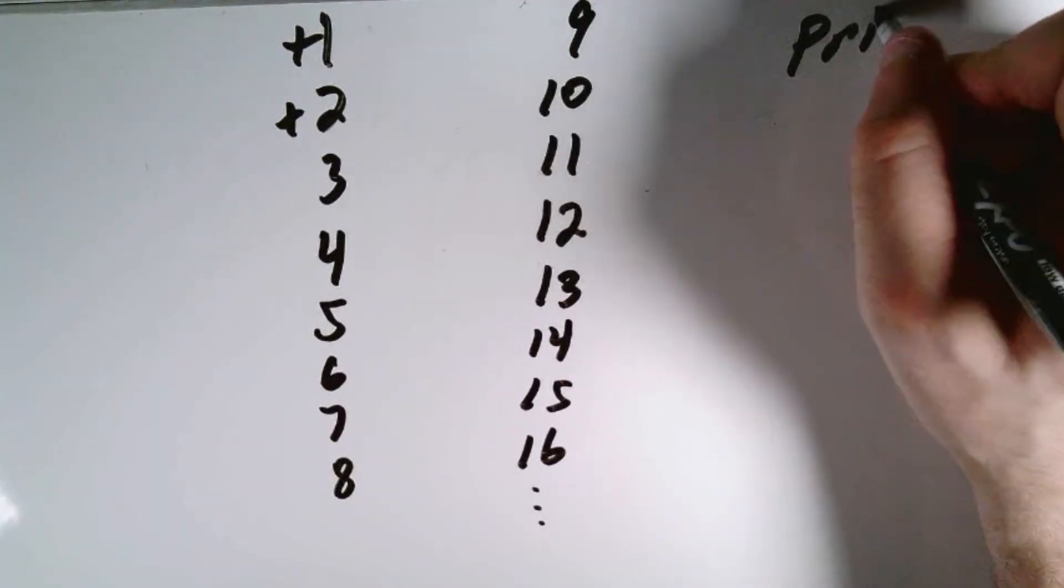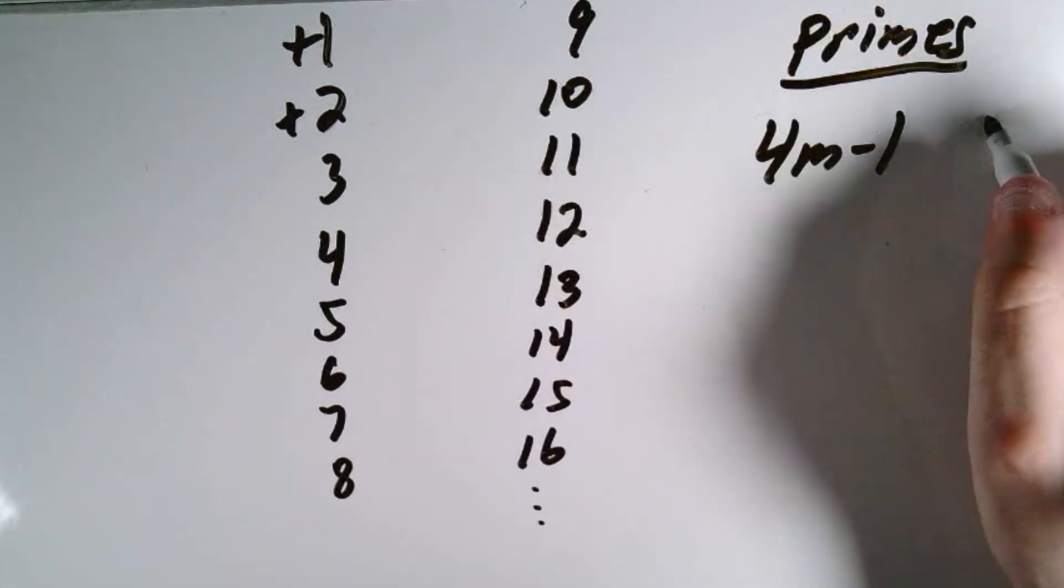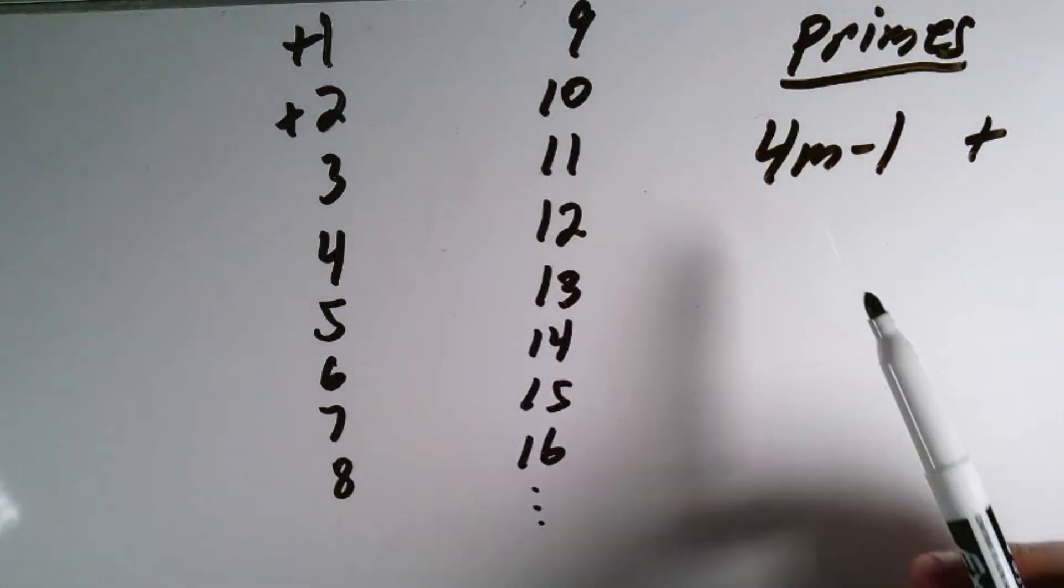Then we're going to make each of these either positive or negative. And here's the rule for doing that. 1 and 2 are automatically positive. Then any primes of the form 4m minus 1, where m is just any integer, will be positive.